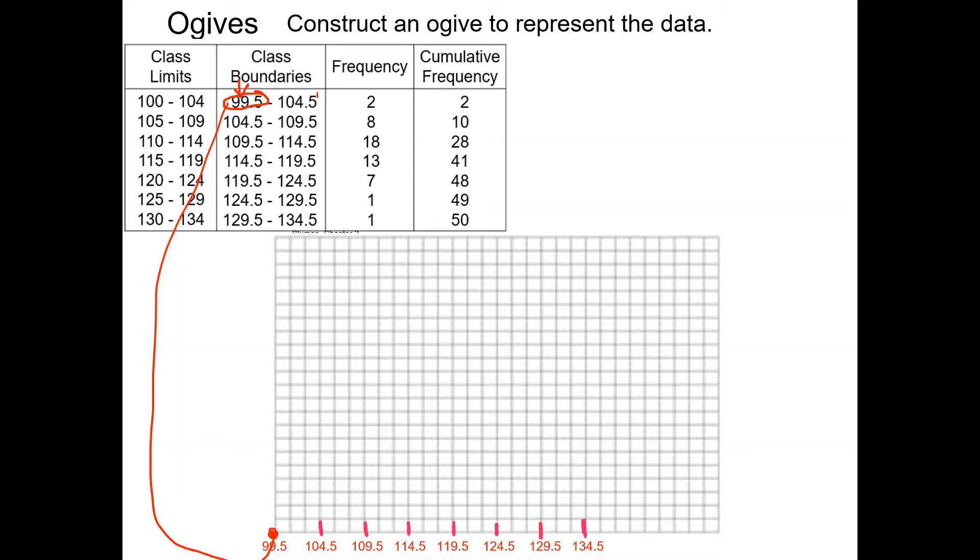And then after that, you just follow down this column: 104.5, 109.5, 114.5, 119.5, 124.5, 129.5, and 134.5. And then we have to go up all the way to 50. So I skipped one and went every two and went by five. So like skip one 5, skip one 10, skip one 15, skip one 20. You can see from the picture.